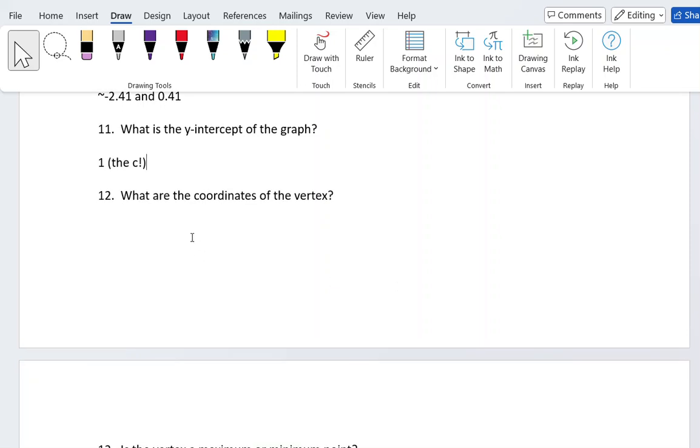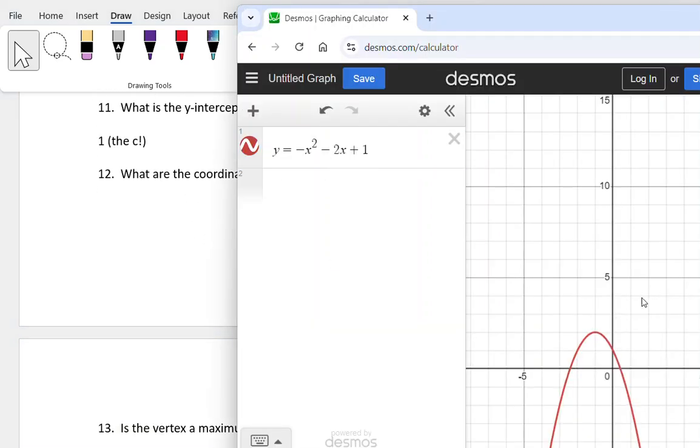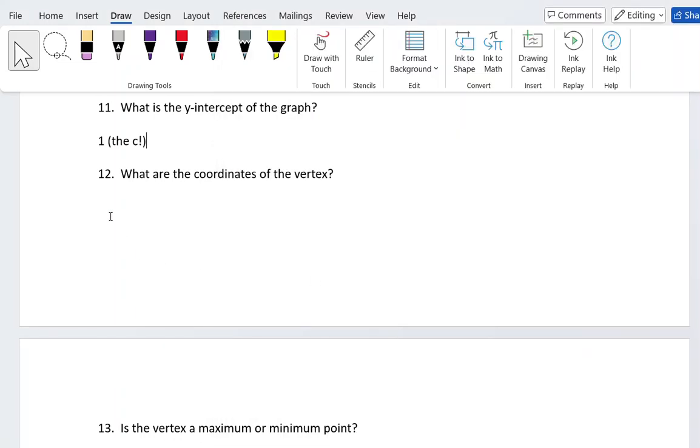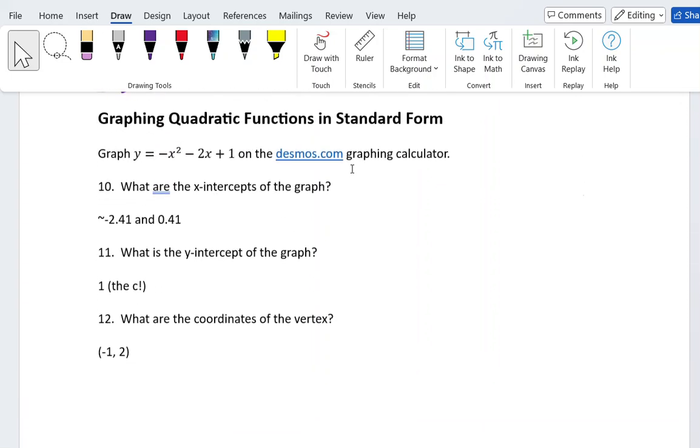Next we're looking for the coordinates of the vertex. Back to my graph—here's my vertex, (-1, 2). When I have the graph, obviously I can click on the point and easily figure out what it is. The homework in MyLab is going to have you do it in a different way—they're going to have you use a formula, so I'm going to walk through how to do that really quickly.